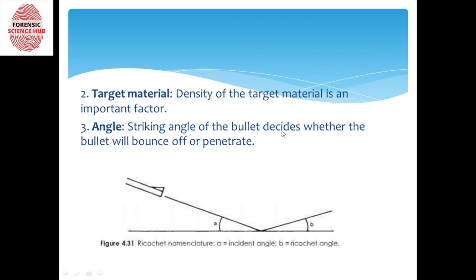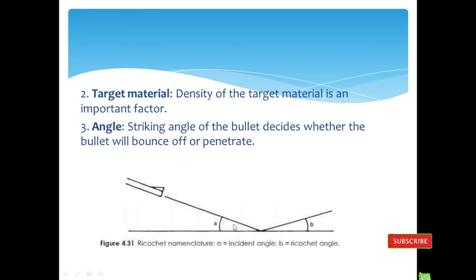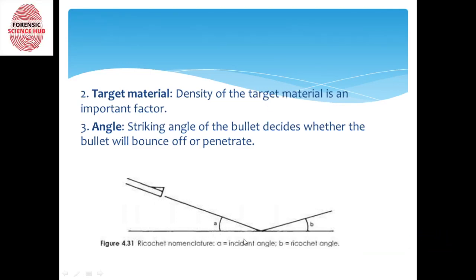Next is angle. The striking angle of the bullet also decides whether it's going to penetrate or bounce off. The angle can be perpendicular, parallel, obtuse, or acute. The more parallel the angle — for example, if the bullet comes horizontally — the more likely it is to just touch the surface and bounce off quickly rather than penetrate. But if the bullet comes in at a perpendicular angle, there are more chances it will instantly enter and penetrate the target without ricocheting.